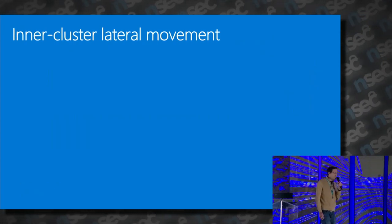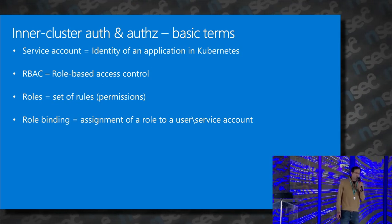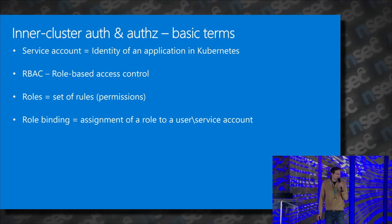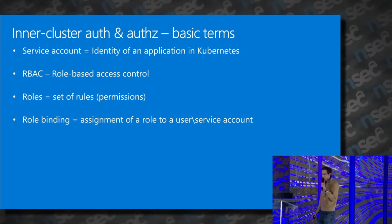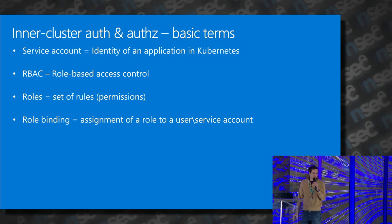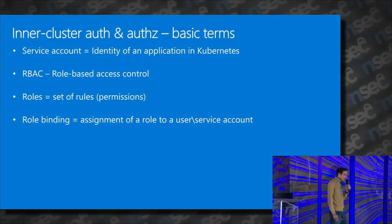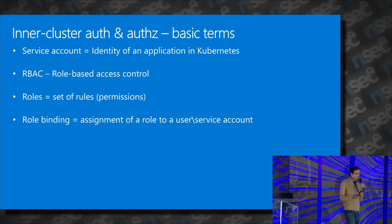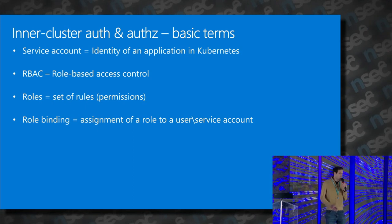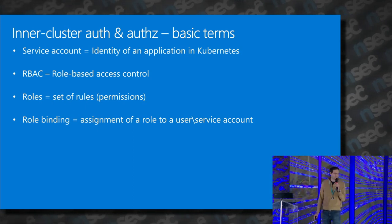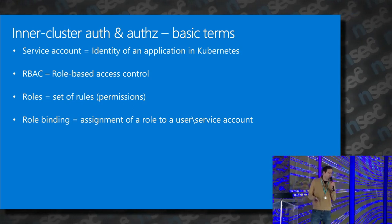We're going to start with inner-cluster lateral movement. But first, we should know some basic terms of cluster authentication and authorization. The first term is service account, which represents an identity of an application in Kubernetes. Kubernetes uses RBAC — role-based access control. RBAC has roles, which are sets of permissions, and role bindings, which attach identities to roles.